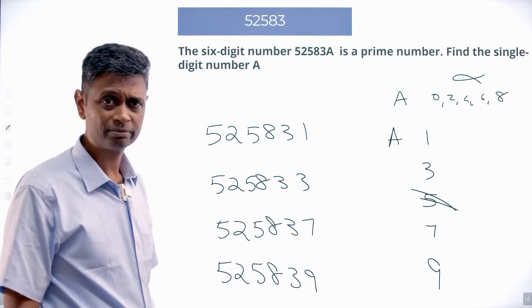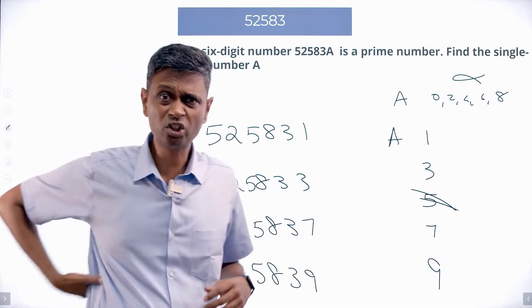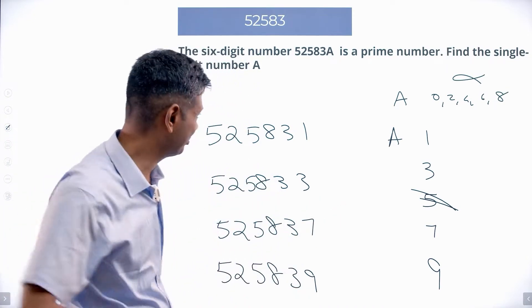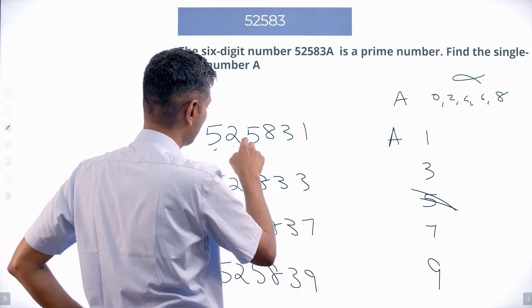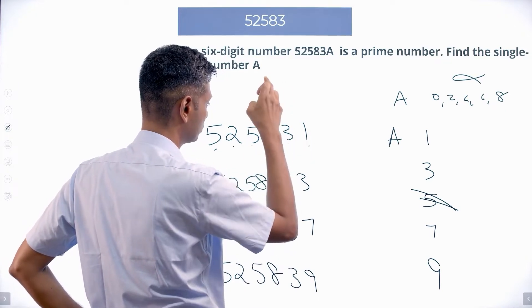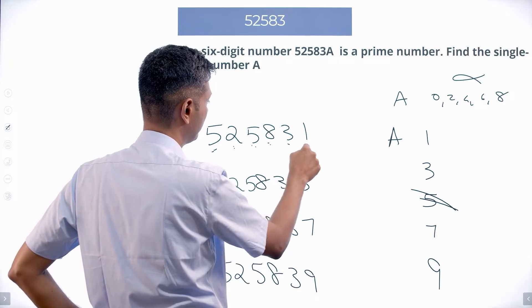Let me see if this is prime. How do I check whether such a large number is prime? I know, based on what I do already, I'll add all the digits: 5 plus 2 is 7, 7 plus 5 is 12, 12 plus 8 is 20, 20 plus 3 is 23, 23 plus 1 is 24. Sum of the digits is 24.